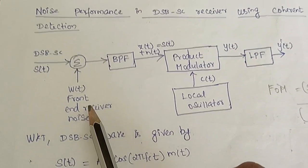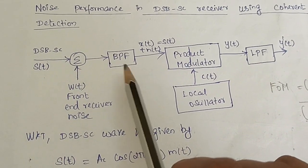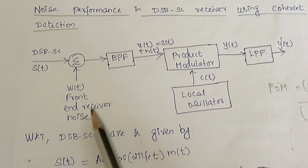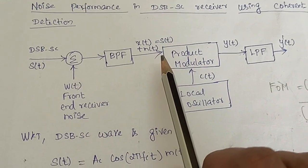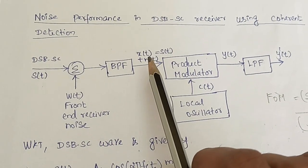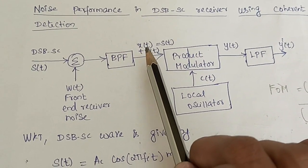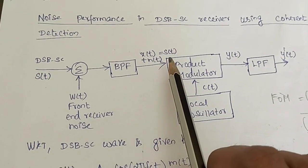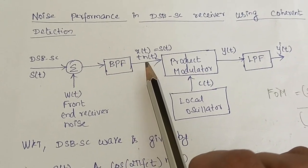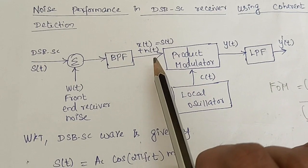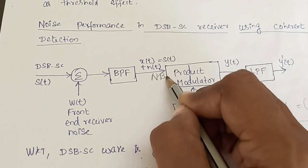Once the signal affected by noise reaches the receiver, the very first component is a bandpass filter. At the output of the bandpass filter, we get a signal component plus a narrowband noise component, represented as X of T. The signal comes completely through the bandpass filter, and only a narrow bandwidth of noise is allowed to pass — called narrowband noise.